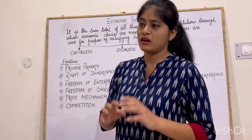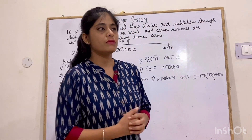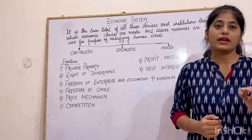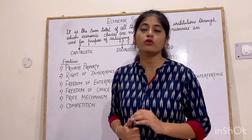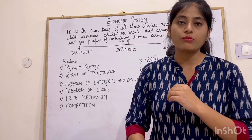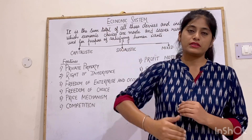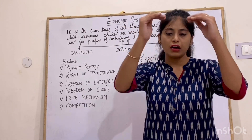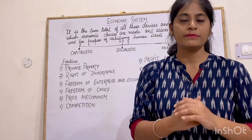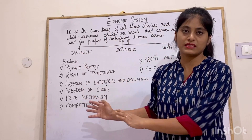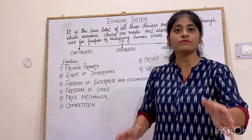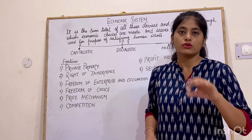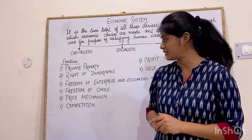Next is price mechanism. Price mechanism is a system, a mechanism where according to the demand and supply, price is determined. Here they follow price mechanism — just commodity ka demand jyada hoga, they will increase the prices; just the supply jyada hoga, demand kama hoga, they will decrease the prices. Price mechanism is a mechanism where quantity demanded should be equal to quantity supplied, and accordingly price is determined.